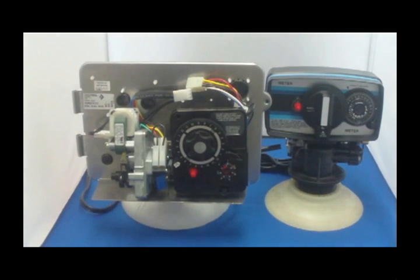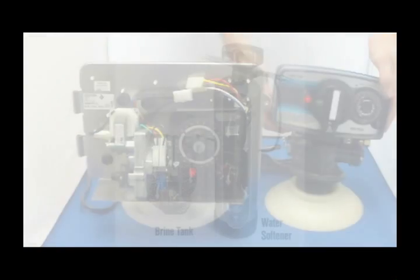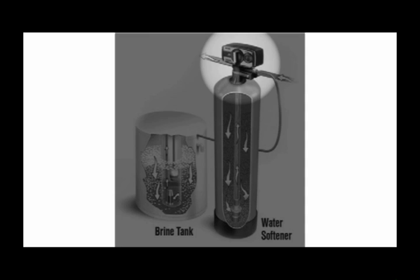Regeneration control valves' main function is to redirect water in a water softener system. The system consists of a softener tank and a brine tank.